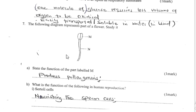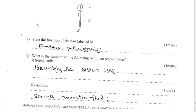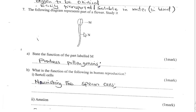Question 7: The following diagram represents part of a flower. We have parts M and N. The function of the part labelled M — the anther — is that it produces pollen grains.